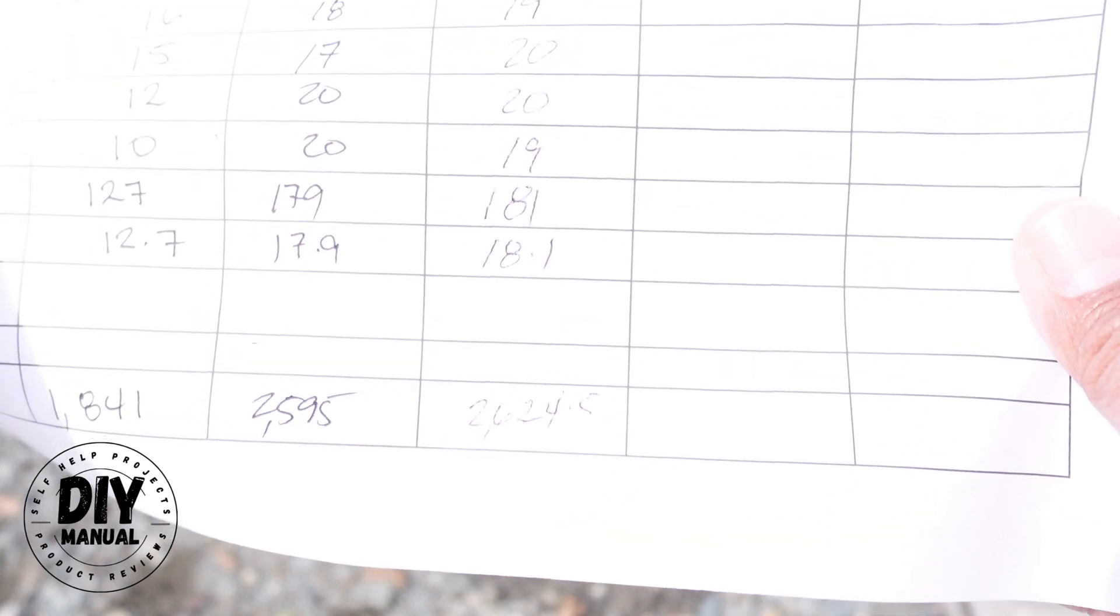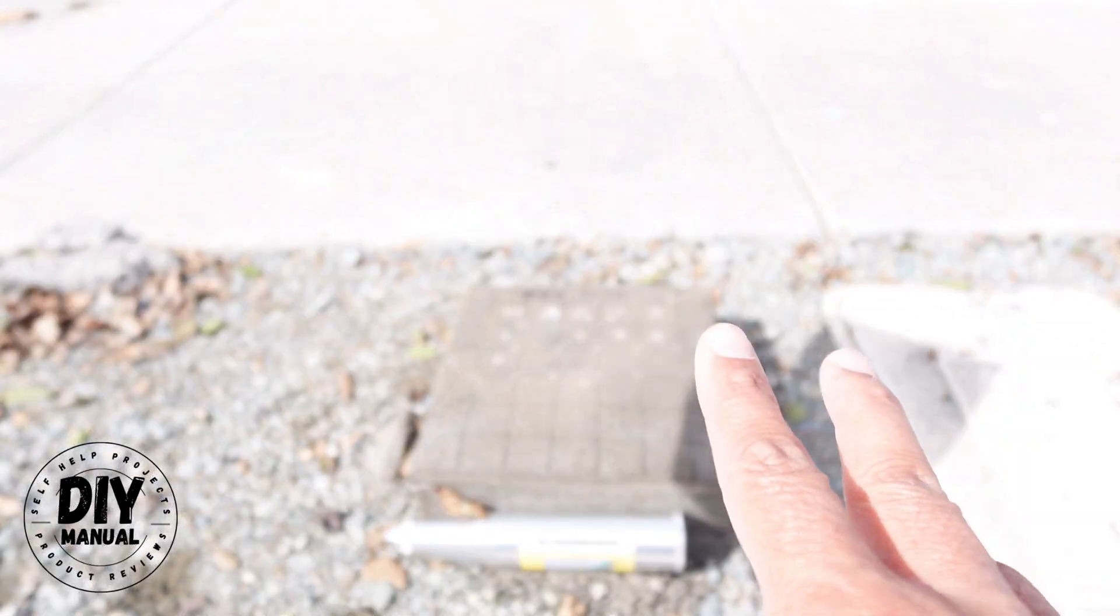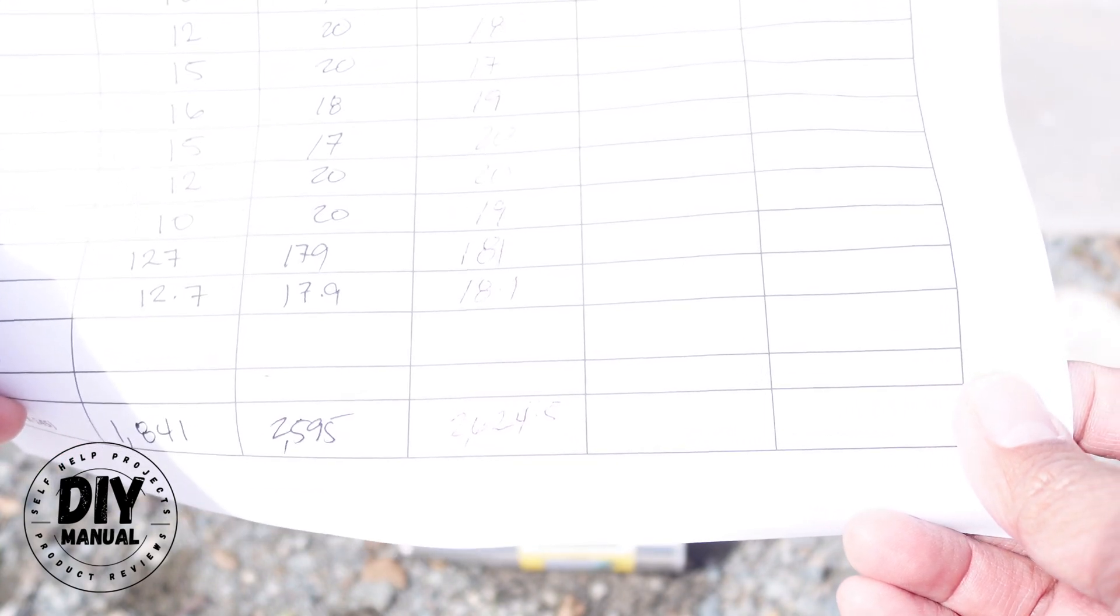I'm hoping it will reach 3,000 PSI at day 28 because, if I remember correctly, when I asked for a quote for a parking spot or for a driveway, I was quoted with a 3,000 PSI concrete. So I believe if this thing can reach 3,000 PSI, that means that it's good enough for a driveway or a parking spot. But right now, we're still on 2,642. It's 400 PSI short from the standard quote that I got.